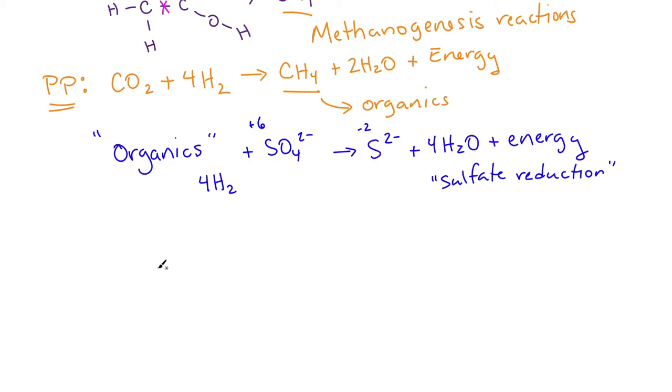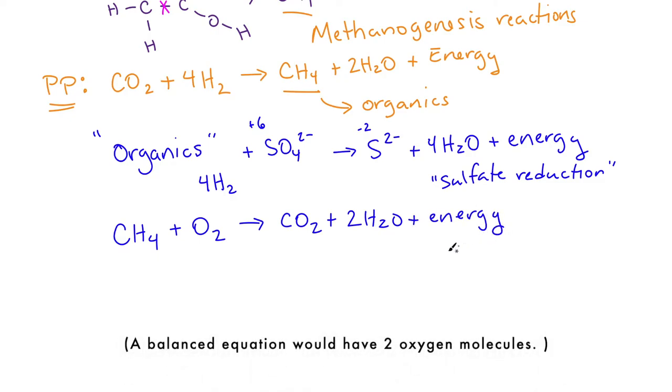There are also organisms that can eat the methane that's created by methanogens. We could start with methane, and that reacts with oxygen if you have oxygenic photosynthesis, and this creates carbon dioxide plus water plus energy. This reaction is called methanotrophy. Methano for the methane, troph is eat. Methanotrophy is the process of eating methane.